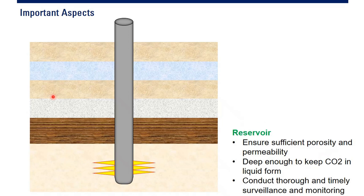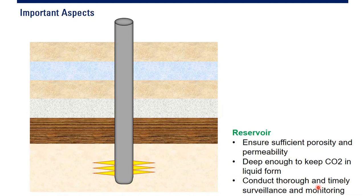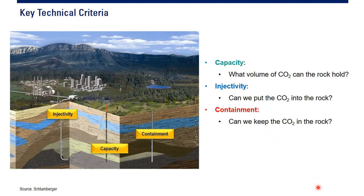For the reservoir, you need to ensure sufficient porosity and permeability for good CO2 storage. It should be deep enough so that CO2 is still in supercritical form — jika kedalamannya dalam, bagus, karena tekanannya tinggi, CO2 will be in liquid or supercritical form. And we need to ensure thorough and timely surveillance and monitoring to know the CO2 plume flow and distribution.